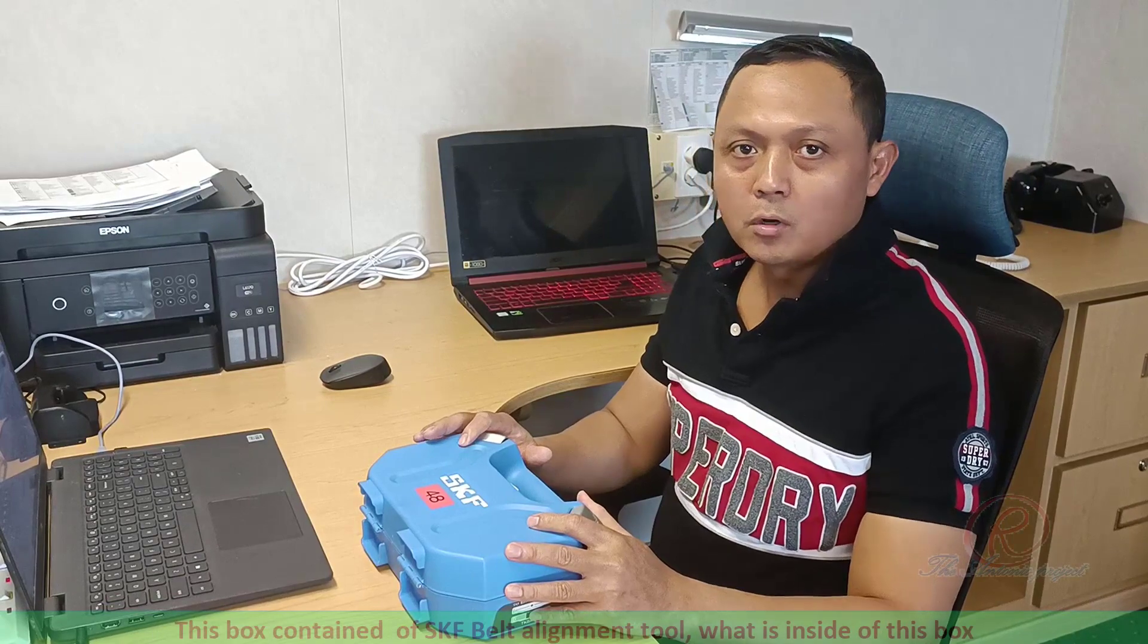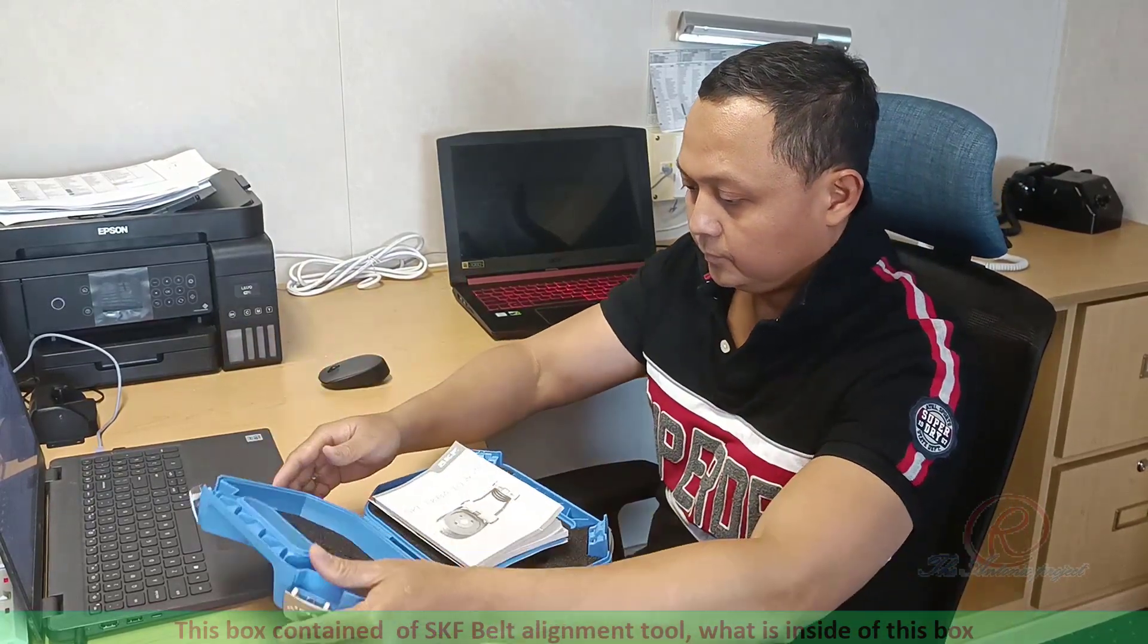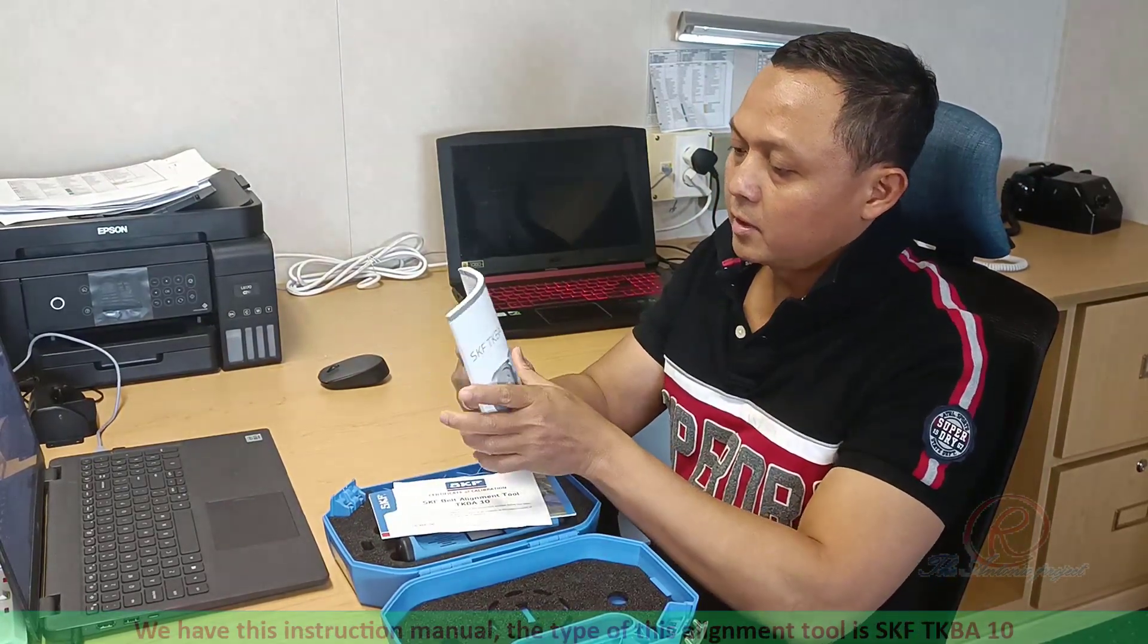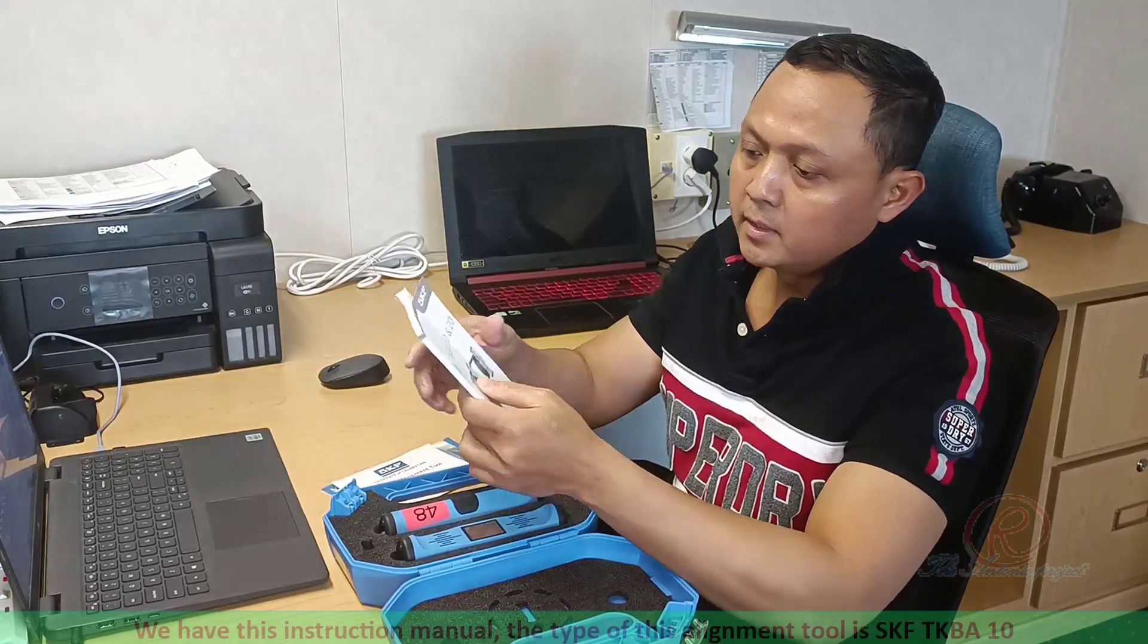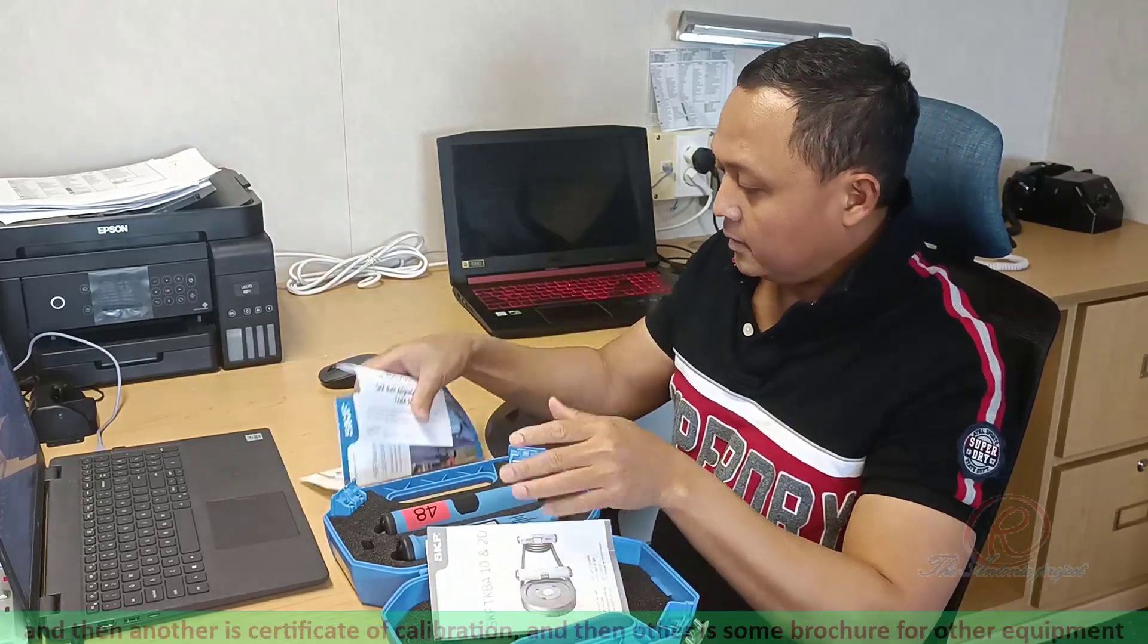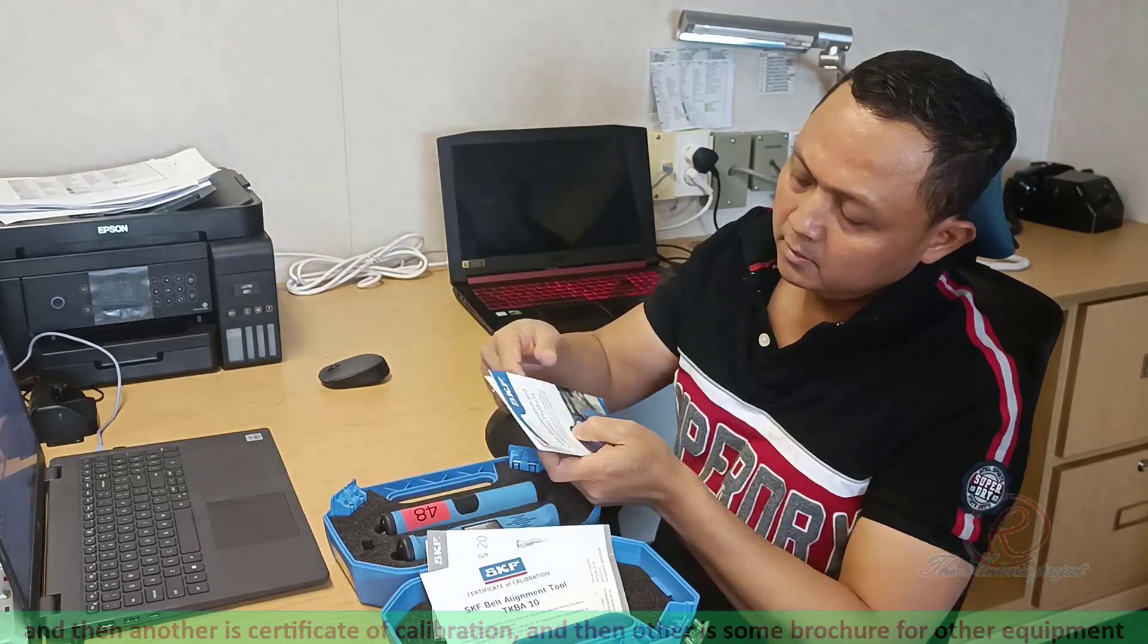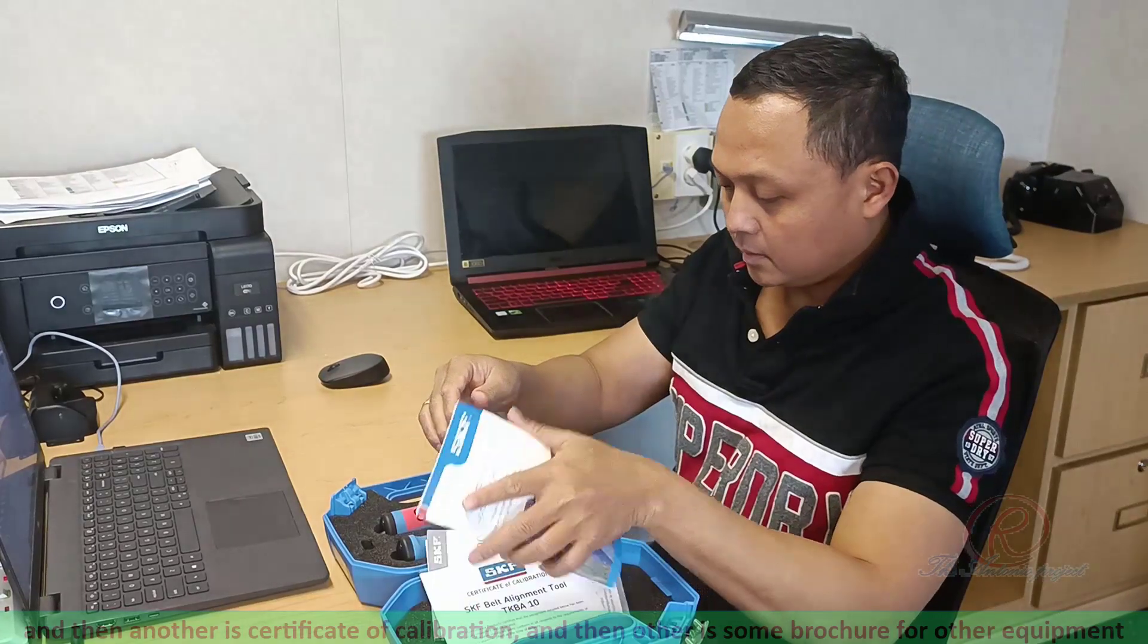This box for 10 of SKF Belt Alignment Tool. What is inside of this box? What we have is instruction manual. The type of this alignment tool is SKF TGB E10. And then another is Certificate of Calibration, and then other is some brochure for other equipment.